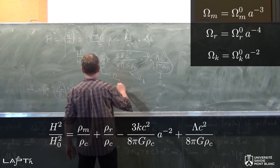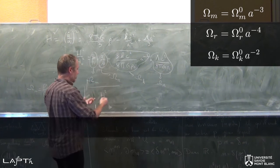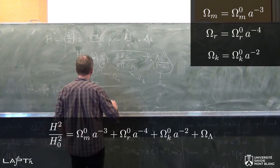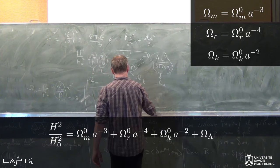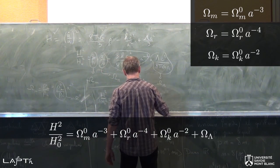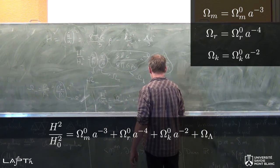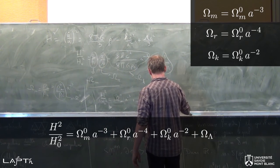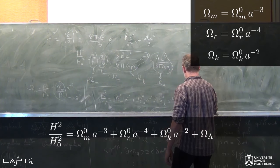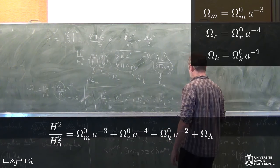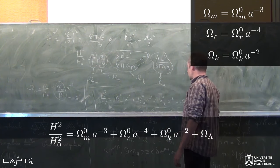On fait exactement la même chose pour les autres termes, et on se retrouve au final avec l'équation de Friedman-Lemaître qui s'écrit : H² sur H₀² égal à Ω_M0 fois A puissance moins 3, plus Ω_R0 fois A puissance moins 4, plus Ω_K0 fois A puissance moins 2, plus Ω_lambda. Je pourrais lui mettre un zéro pour être homogène, mais il n'y a pas de raison de le faire, ce sont des constantes qui interviennent là-dedans.